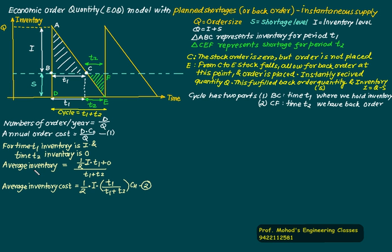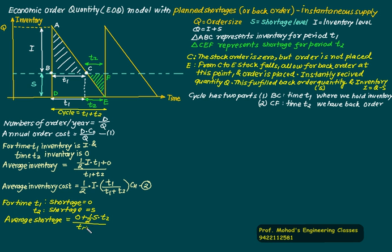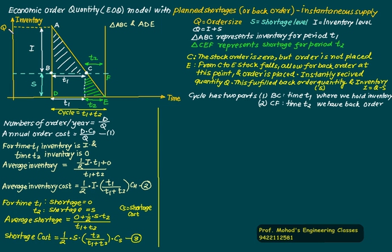Similarly, we calculate the average shortage and shortage cost. During T1 there is zero shortage, and during T2 the shortage is S. The average shortage is one-half times S times T2, divided by the cycle period T1 plus T2. If CS is the shortage cost, the total shortage cost equals average shortage multiplied by CS, giving one-half times S times T2 divided by (T1 plus T2), multiplied by CS.